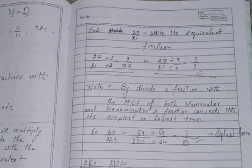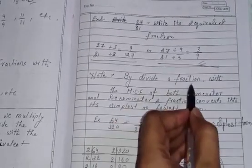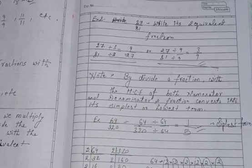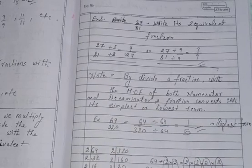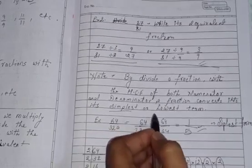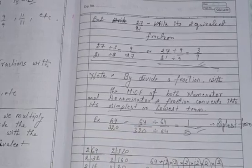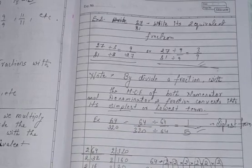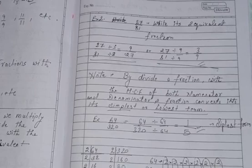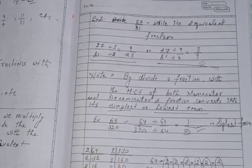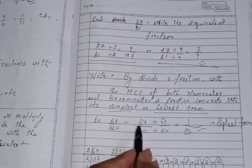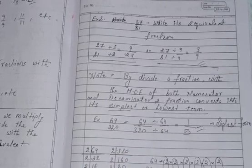Now, note that this is very important. By dividing a fraction with the HCF of both numerator and denominator. It means when we divide the fraction both numerator and denominator by its HCF, we will get its simplest or its lowest form or term. For example, if I say 64 by 320 and they ask to convert it into its lowest or its simplest form. What we will do? Either we can split it by its factors or we can directly divide by its HCF. So, what will I do? Here, I divide it by its HCF. So, how to take out HCF?